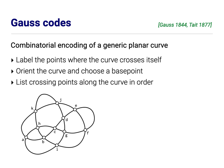So the image of the curve is a four-regular planar graph, possibly with parallel edges and possibly with loops. So Gauss said, okay, let's label the points where the curve crosses itself. We'll orient the curve and choose an arbitrary base point. Here the arrows indicate the orientation of the curve, and the white arrow on the far left indicates the base point. And then we'll list the crossing points along the curve in the order that they occur.